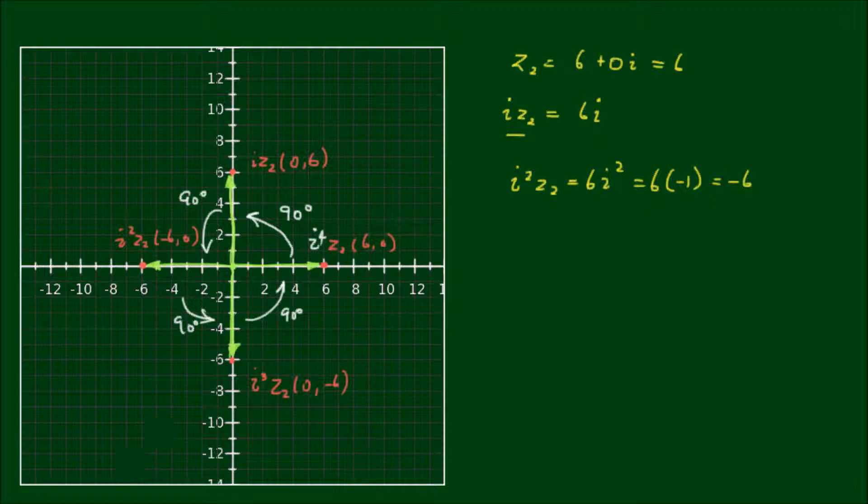So I'll write that down, i to the fourth. i to the fourth of z2, or i to the fourth of any complex number, is simply equal to the original complex number.